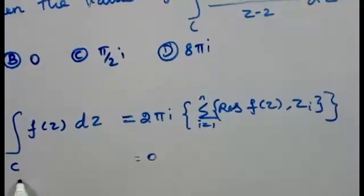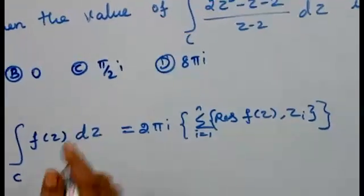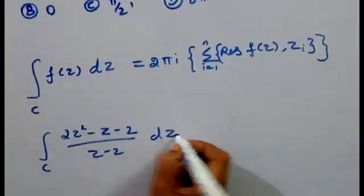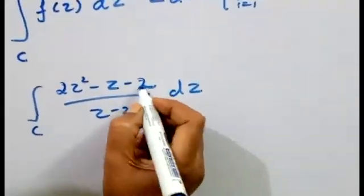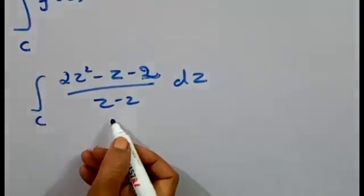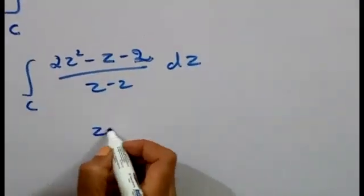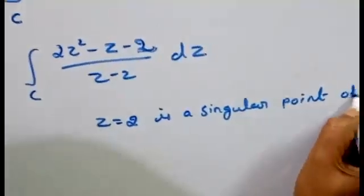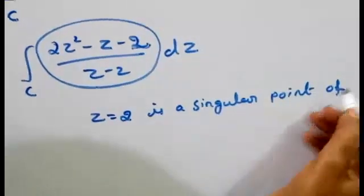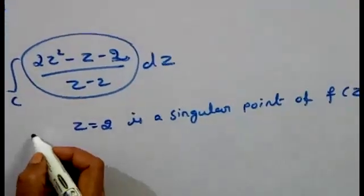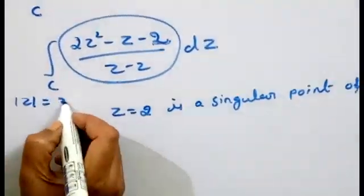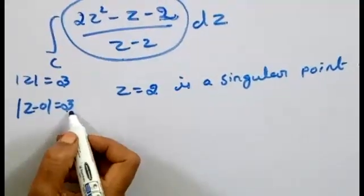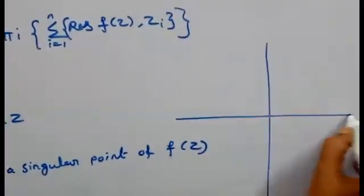If no singular points exist inside C, the integral value is 0. The function f(z) = (2z²−z−2)/(z−2) has a singular point where the denominator equals zero, i.e., z=2. The given curve |z|=3 is a circle with center 0 and radius 3. The singular point z=2 lies on the real axis inside the circle of radius 3, since |2| = 2 < 3. So z=2 is inside the curve.